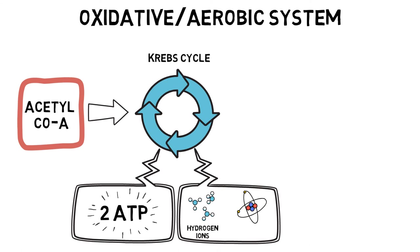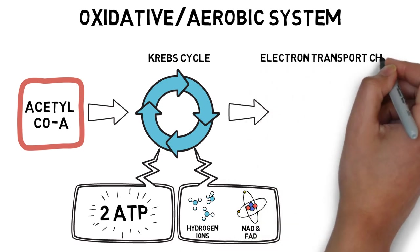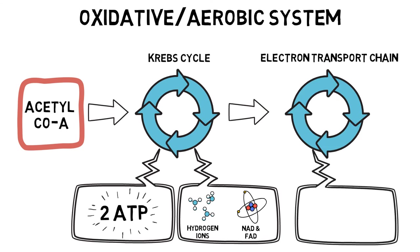These hydrogen ions combine with enzymes called NAD and FAD to form NADH and FADH2, and enter another series of reactions called the electron transport chain. Approximately 32 ATP are produced at the end of this process, along with some water. We have produced significantly more ATP aerobically than anaerobically, and have little to worry about in terms of waste products. However, oxygen is not always readily available, which is why this energy system requires some patience. It's not the quickest energy system to produce ATP, but once you get your reward, it is definitely worth the wait. This is why this system primarily deals with low intensity activities over long durations, such as long distance cycling or a marathon.